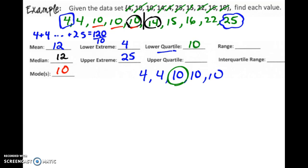Our upper quartile, you're going to do the same, similar idea, but you just look at the values above the median. So 14, 15, 16, 22, and 25. And we're going to find the median of that, which is 16.